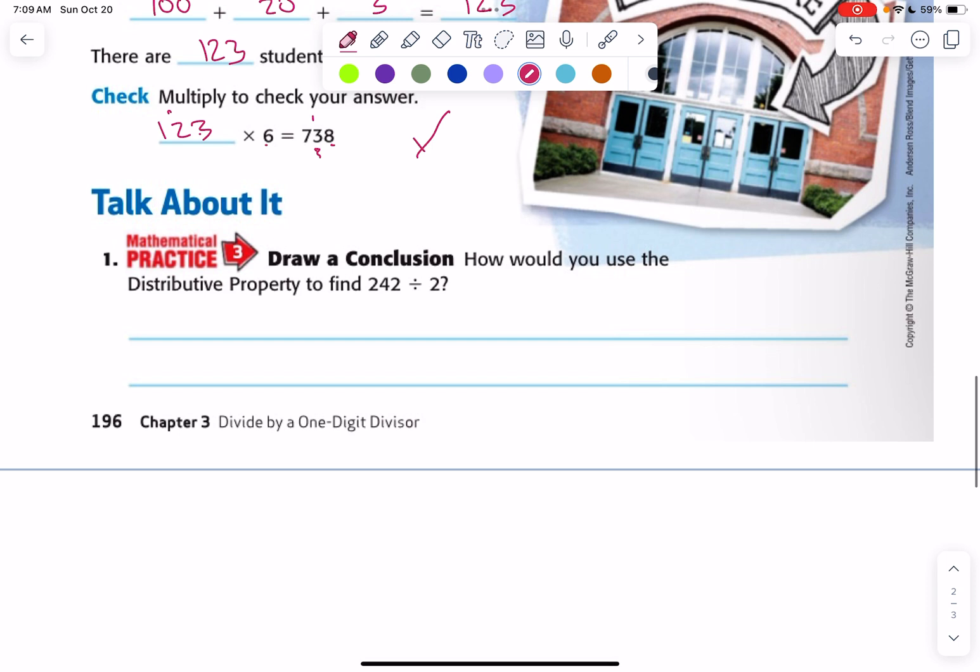How would you use the distributive property to find 242 divided by 2? So, let's see here. If we break this apart, that'd be 200 divided by 2 plus 40 divided by 2 plus 2 divided by 2. So we could just bring these down right underneath. 200 divided by 2 is 100. 40 divided by 2 is 20. And 2 divided by 2 is 1. 100 plus 20 is 120 plus 1 is 121.